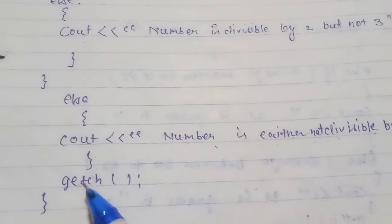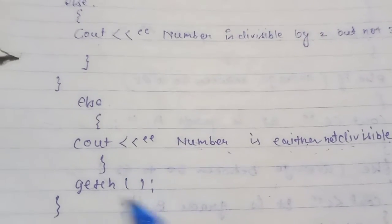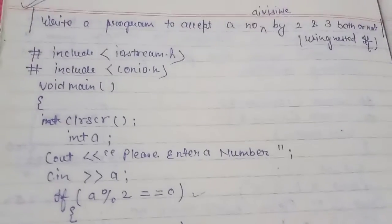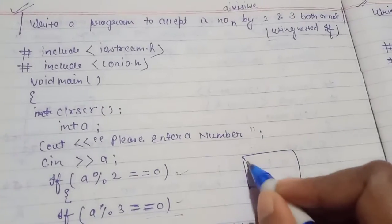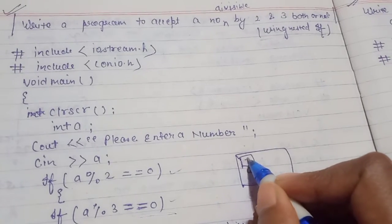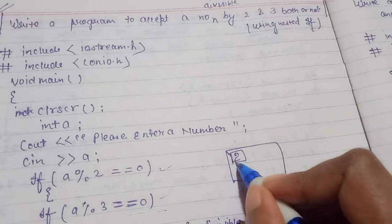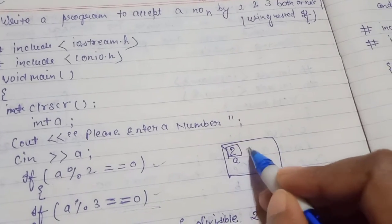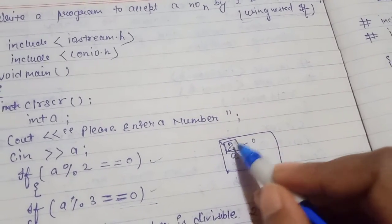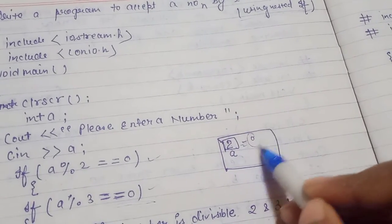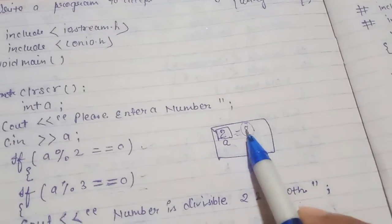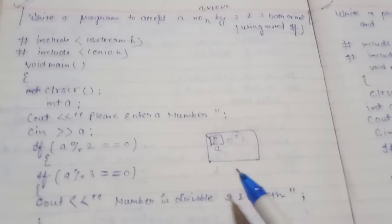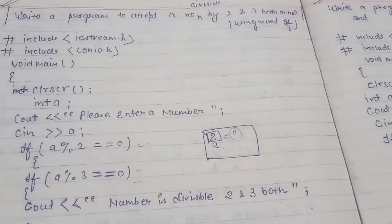The curly braces are closed and getch() is called to terminate the program. This is how you can make a program to check if a number is divisible by 2 and 3 both or not. For example, if you give the number 2, it is divisible by 2 and the remainder is 0. This is how you can easily make this program in C++. Thank you so much for watching — we will come back with another video.